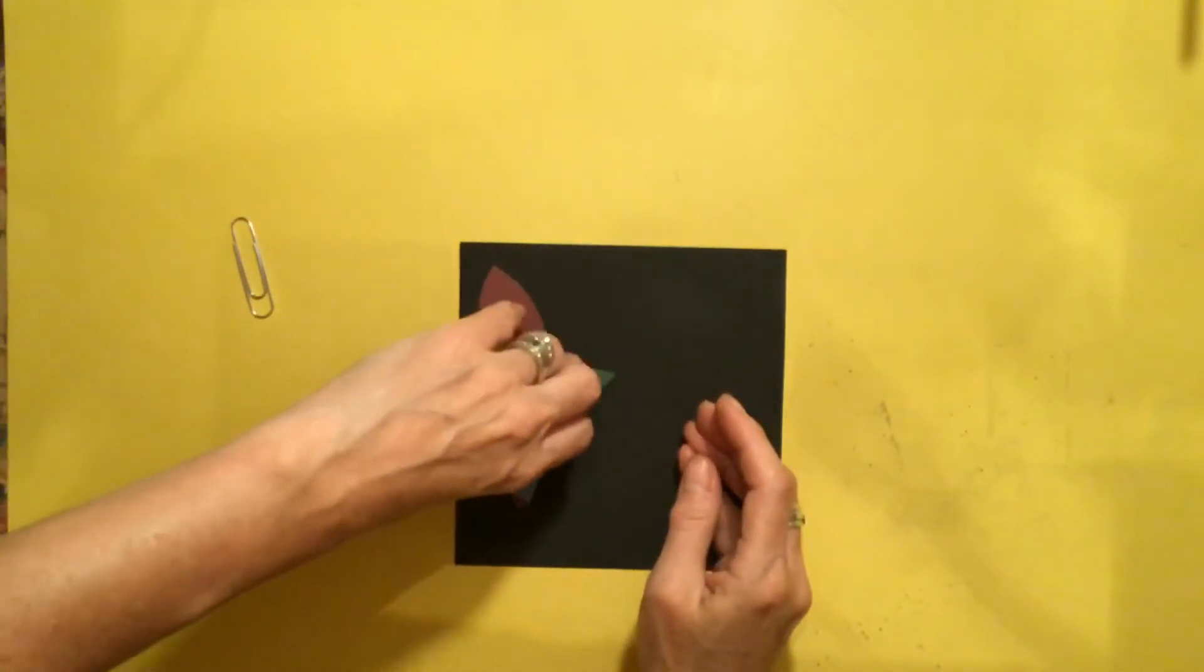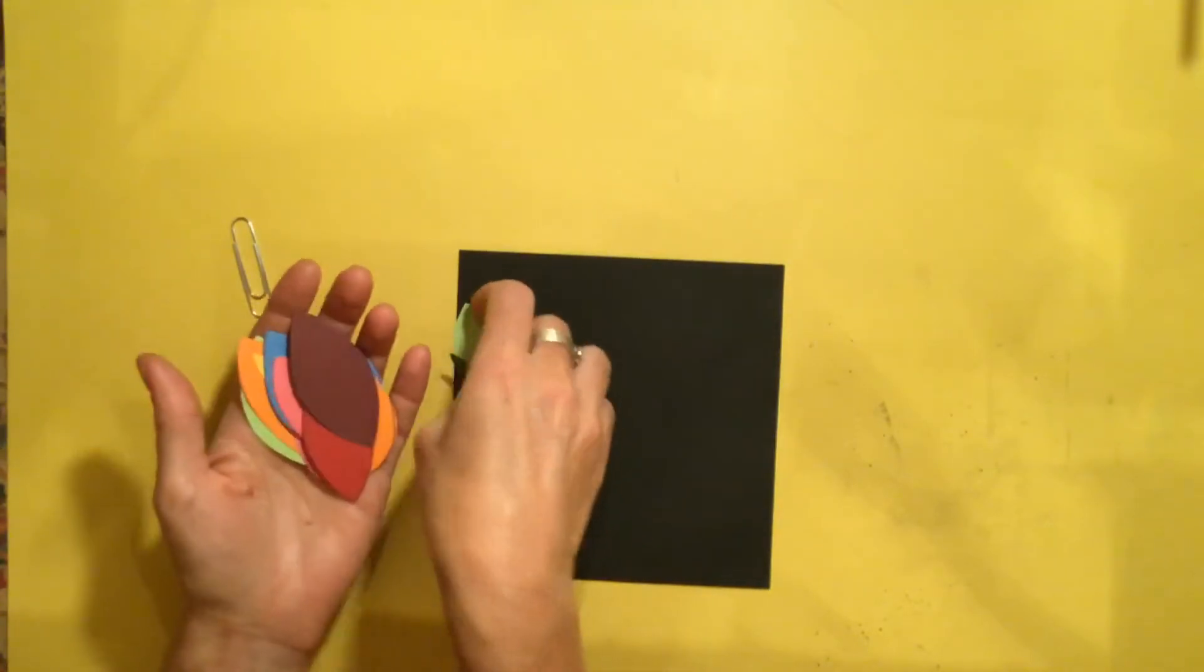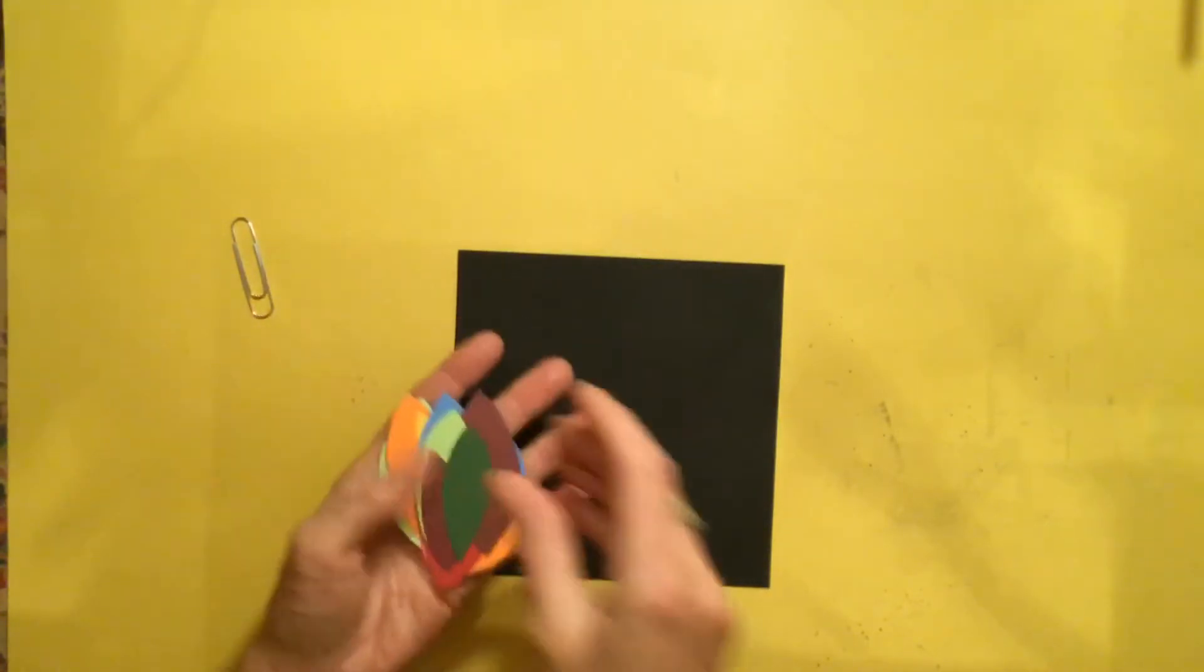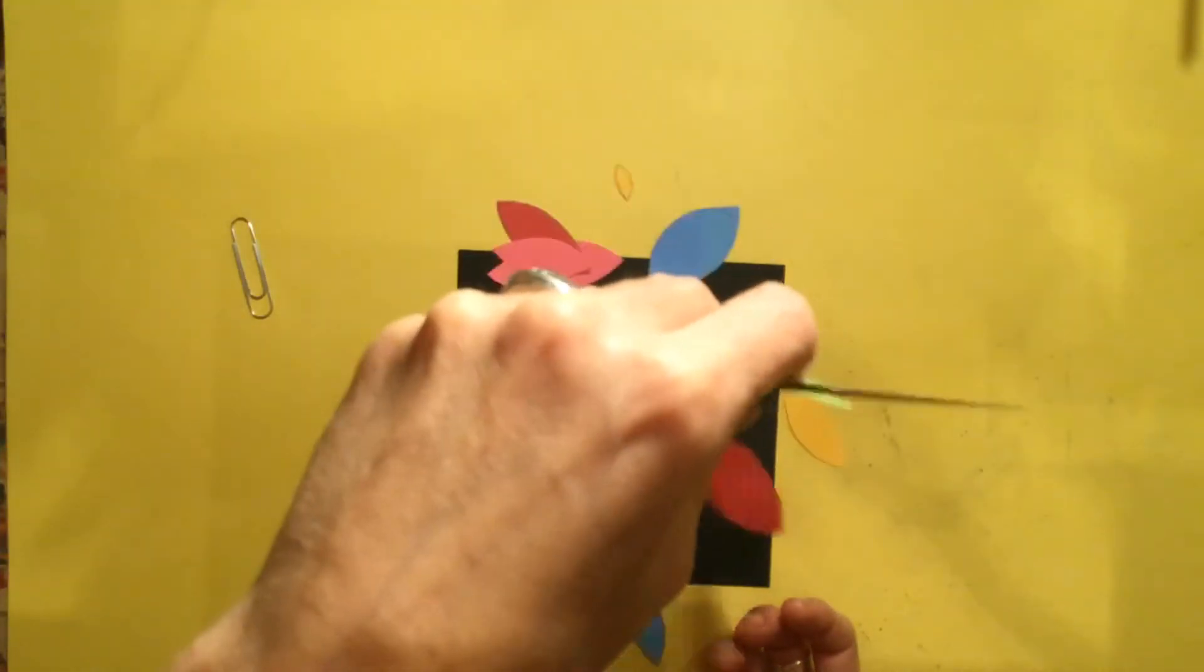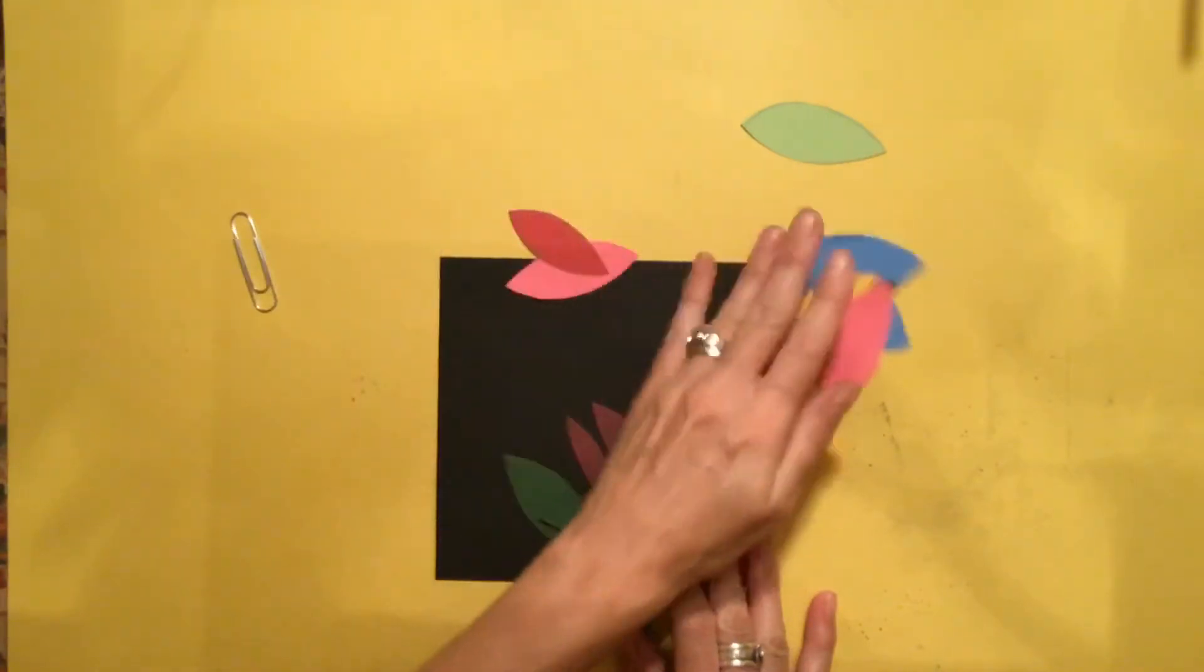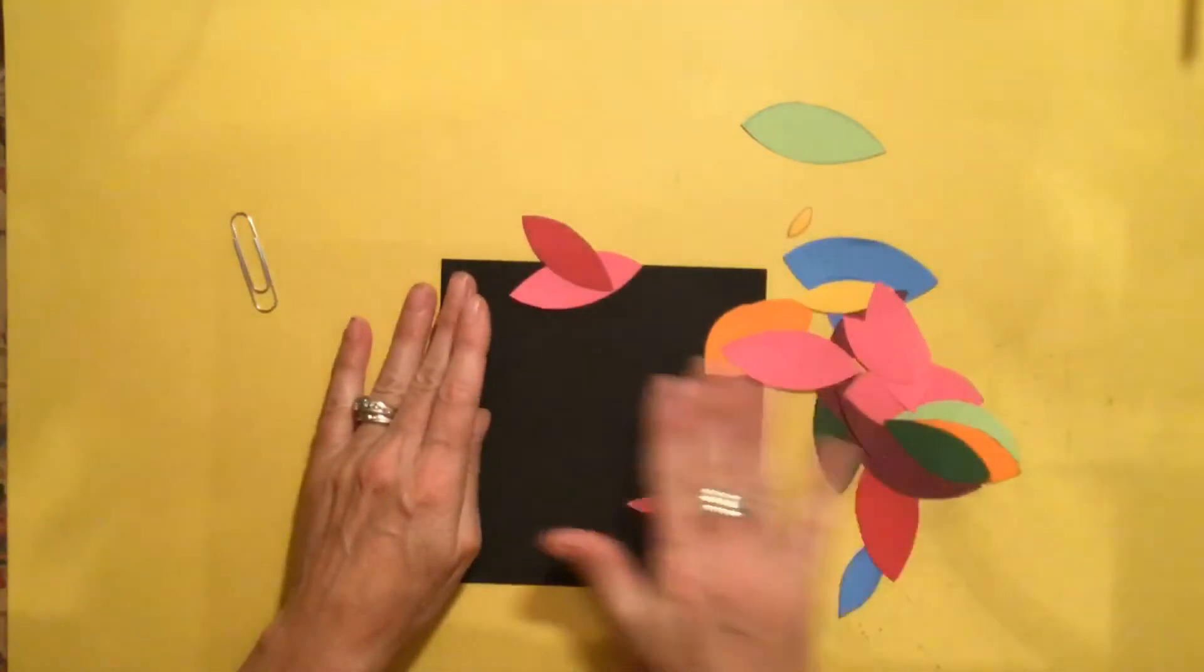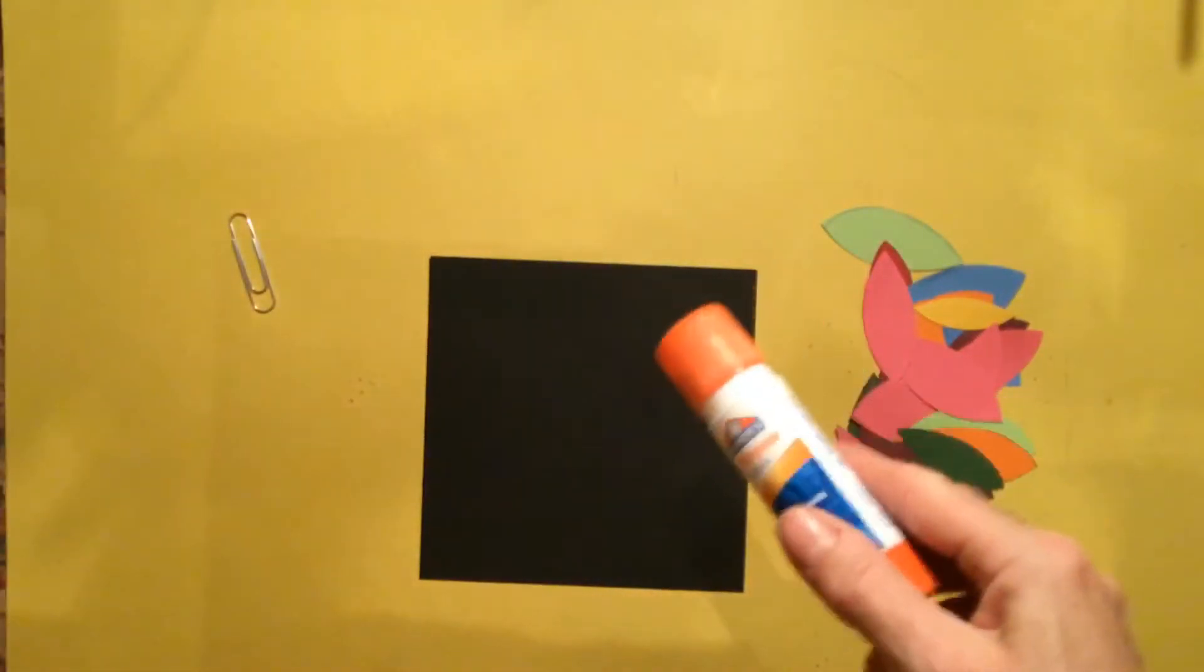And we are going to take our pile of leaves and imagine that they are just falling down from the sky. So what you're going to do is just scoop them off to the side a little bit and grab a glue stick.